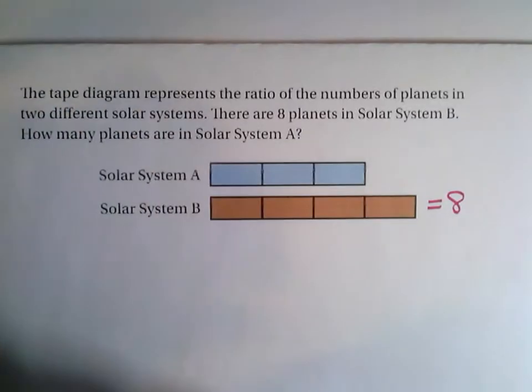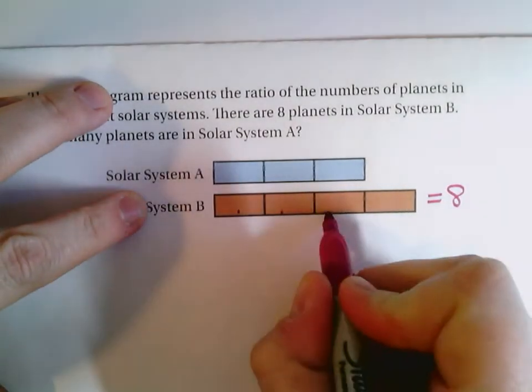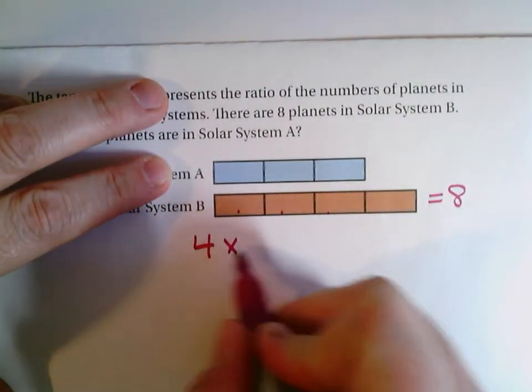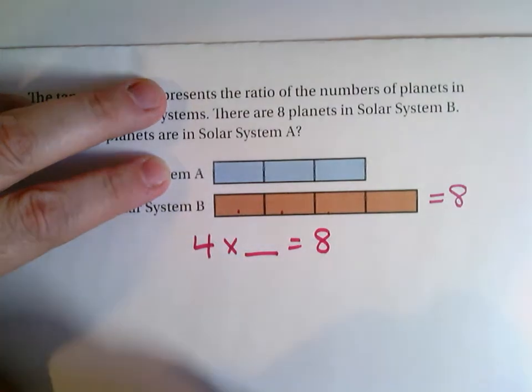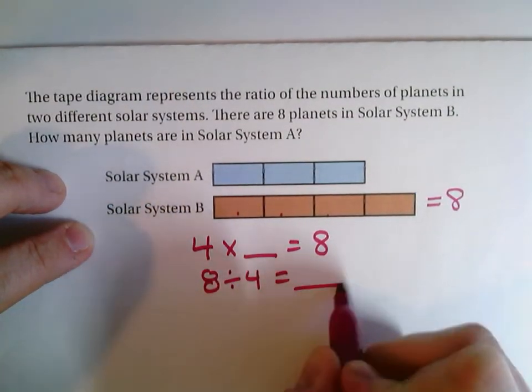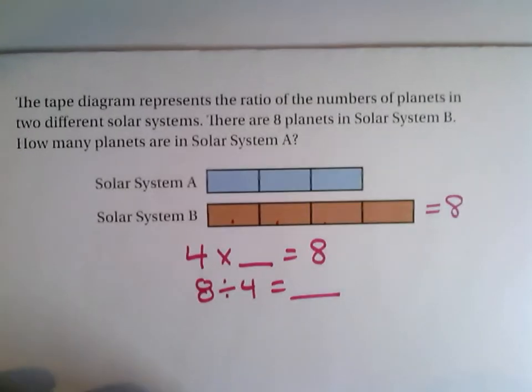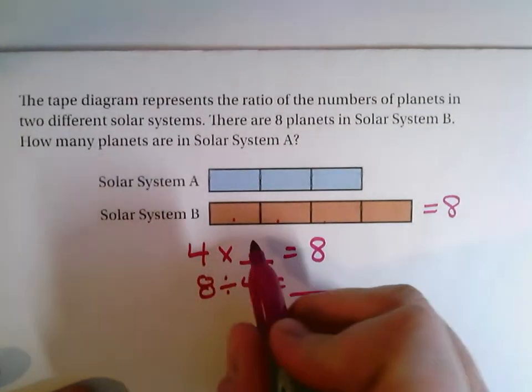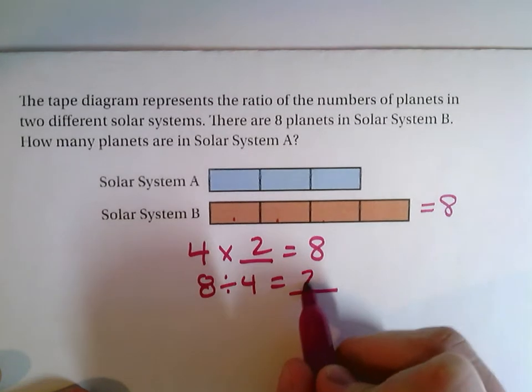Okay. So for solar system B, we know that I have four pieces, four times something equals eight. Or I can write eight divided by four equals what? Either way, you can decide which one's easier for you. I know that four times two is eight or eight divided by four is two.